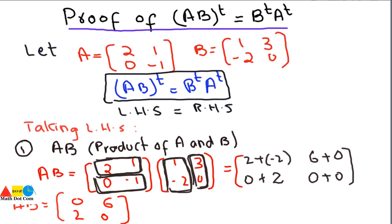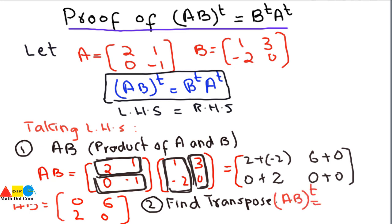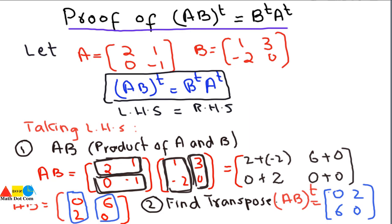Now we find the transpose of AB — that is Step 2 of the left hand side. In a transpose, we change rows into columns or columns into rows. We convert the first column [0, 2] into a row, giving [0, 2], and the second column [6, 0] into a row, giving [6, 0]. So AB transpose equals [0, 2; 6, 0]. We have now found the left hand side.